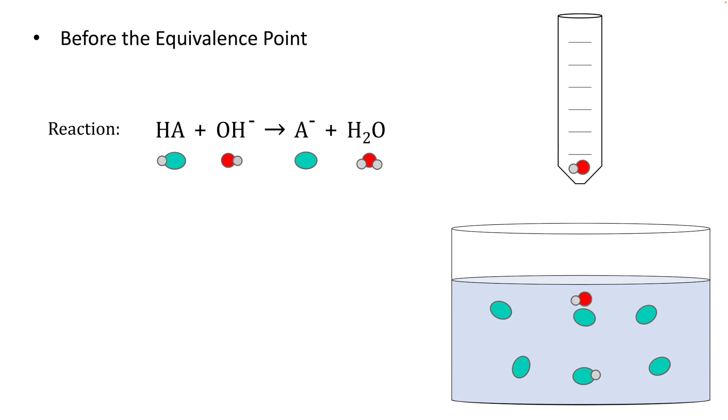If we do one more HA reacting with OH minus, we have converted our last HA into its conjugate base A minus. And at this point, we're not before the equivalence point anymore. We have reached the equivalence point. And that will be the subject of another video.